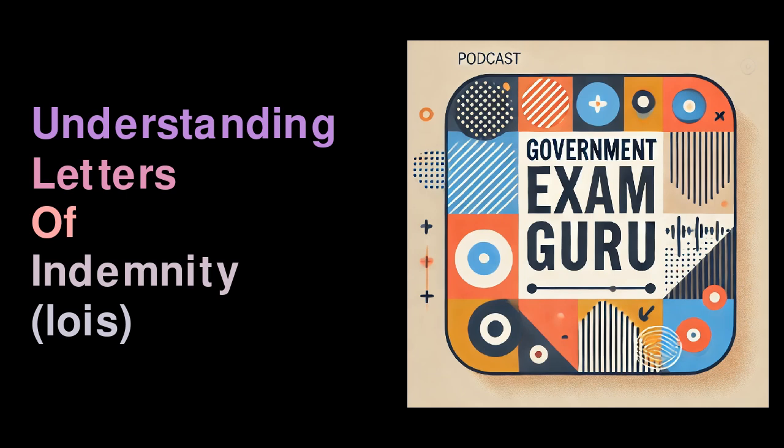Who can issue an LOI? Typically, LOIs are written by a third party, often a large institution like banks or insurance companies, promising to cover any losses related to a party's contractual obligations.